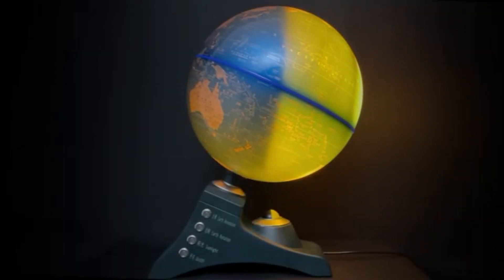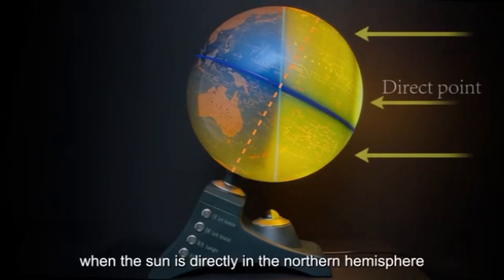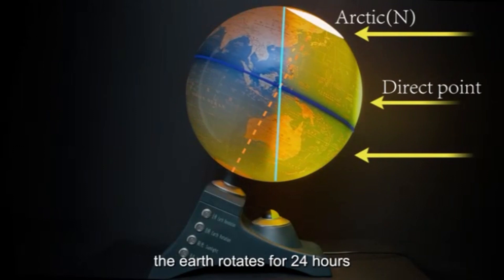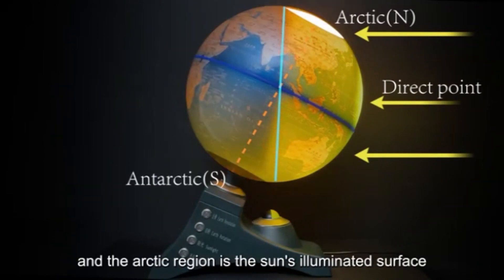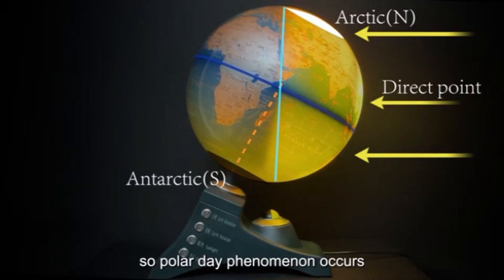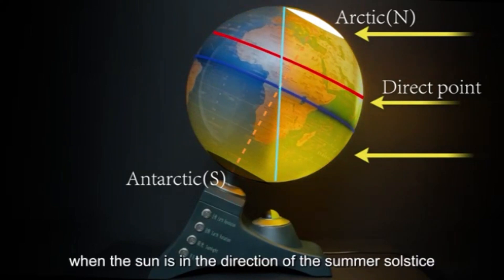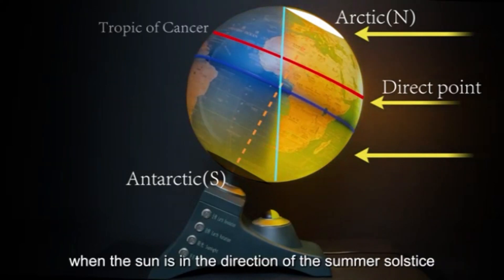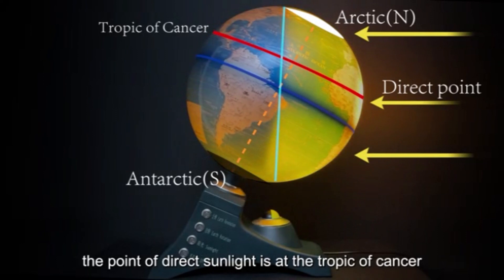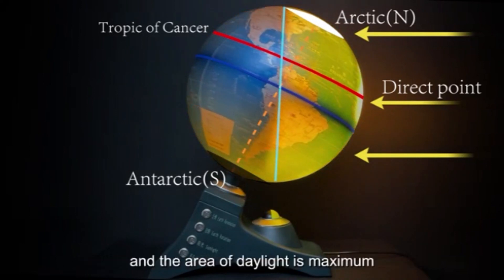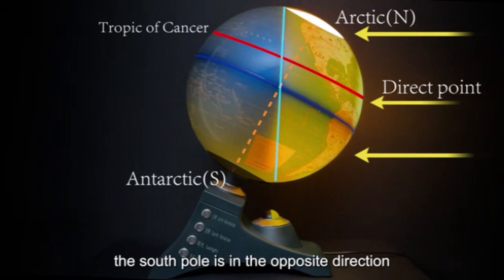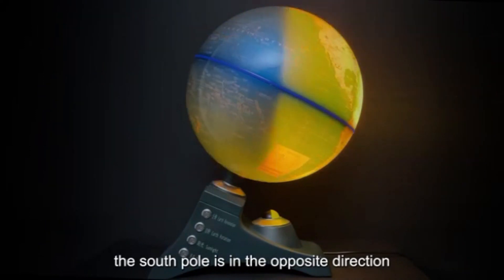Polar day and night: When the sun is directly in the northern hemisphere and the Earth completes a 24-hour rotation, the Arctic region remains on the sun's illuminated surface, so the polar day phenomenon occurs. When the sun is in the direction of the summer solstice, the direct sunlight point is at the Tropic of Cancer, and the area of daylight is at its maximum, with the South Pole in the opposite condition.